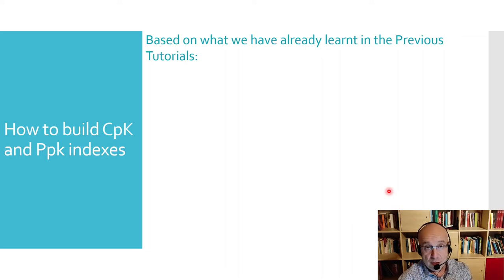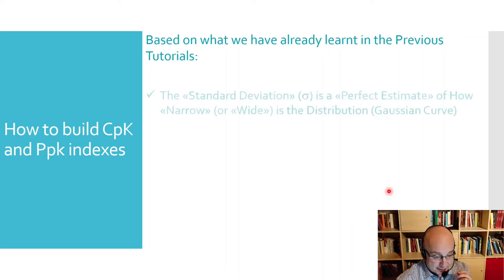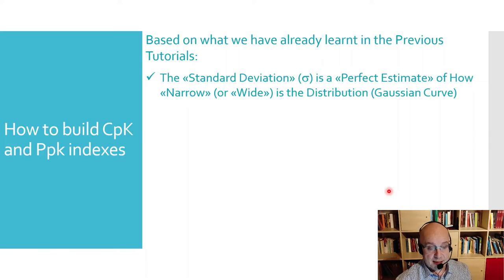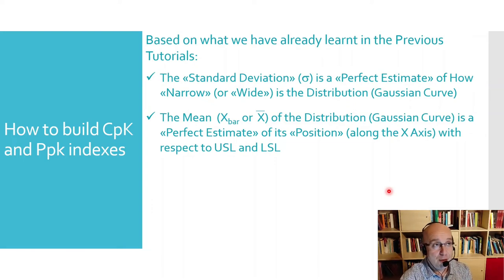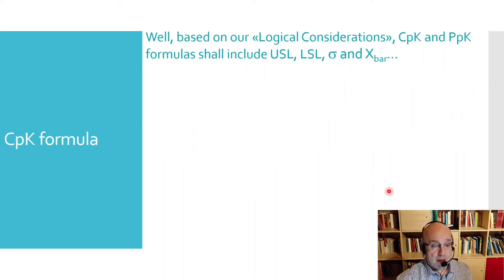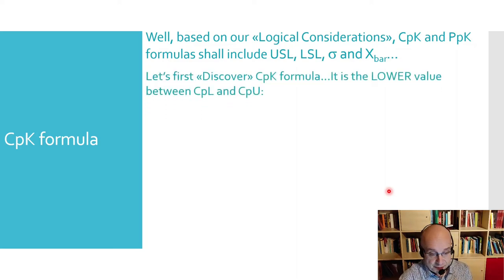We already know from previous tutorials that the standard deviation sigma is a perfect estimate of how narrow or wide a distribution is. The mean, represented by X-bar, is a perfect estimate of the distribution's position along the X axis with respect to USL and LSL — it tells us how symmetrical or asymmetrical the distribution is relative to the spec limits. Based on these logical considerations, CPK and PPK formulas shall include USL, LSL, sigma, and X-bar. Now we are ready to discover the CPK formula.